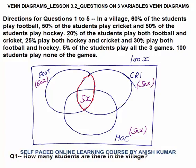Football and cricket common region totals 20x. Since the all-3 part is 5x, the football-cricket-only part is 15x. Similarly, hockey and cricket total is 25x: the hockey-cricket-only part is 20x. Football and hockey total is 30x: the football-hockey-only part is 25x.